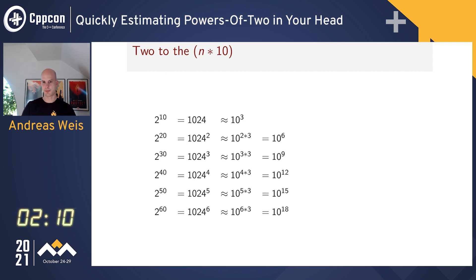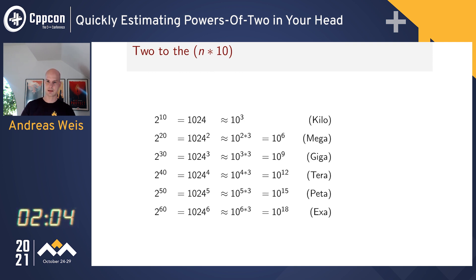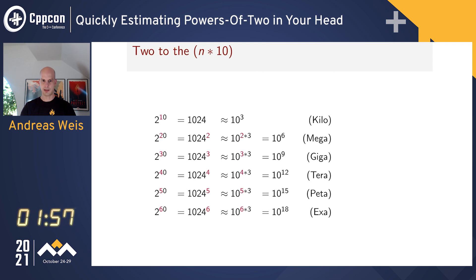If you look at the exponents on the right, you might notice that these correspond exactly to the SI unit prefixes. So the only thing you have to do is look at the number in the tens place — that already gives you the order of magnitude of the result.